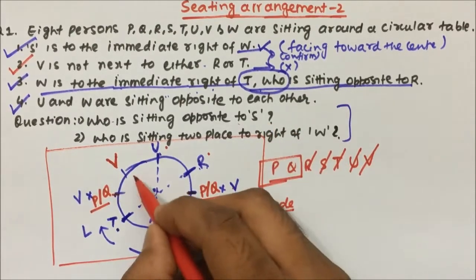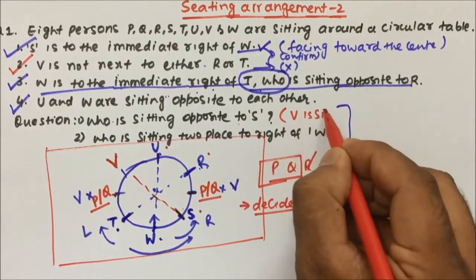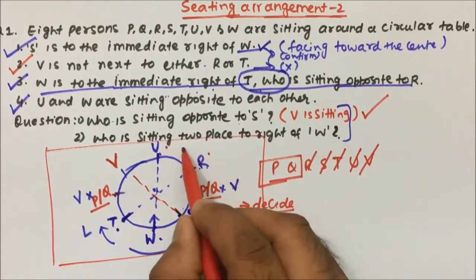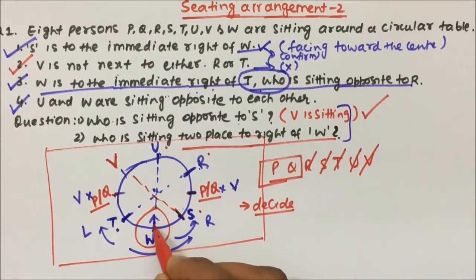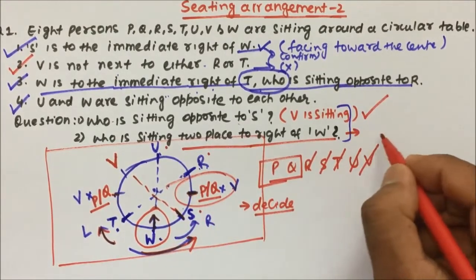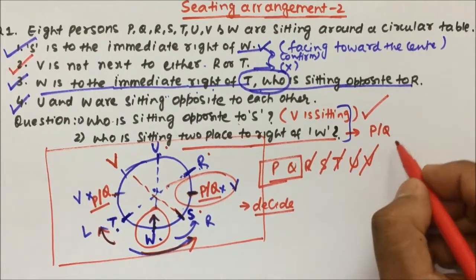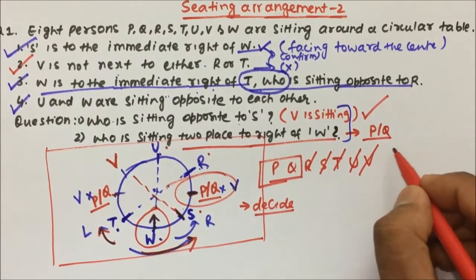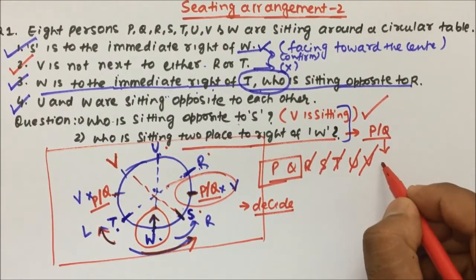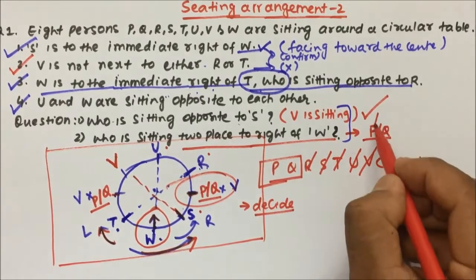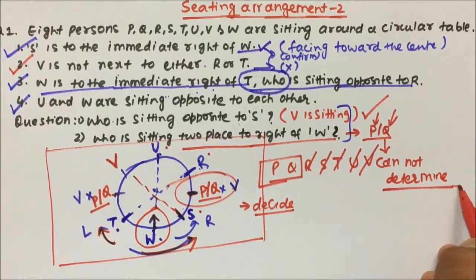Question 1: Who is sitting opposite to S? Opposite to S, V is sitting — so the answer is V. Question 2: Who is sitting two places to the right of W? W is here, and since all are facing the center, right is this side. The second position to the right of W would be either P or Q. Since we cannot determine which of P or Q sits there, the answer is: cannot determine.